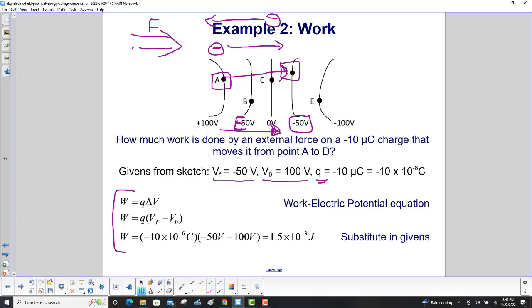Now let's look at the equation. We have work is Q delta V. That's the equation for an external force. If we wanted to know the work done by the field, that would be minus Q delta V. You really have to pay attention to the signs.